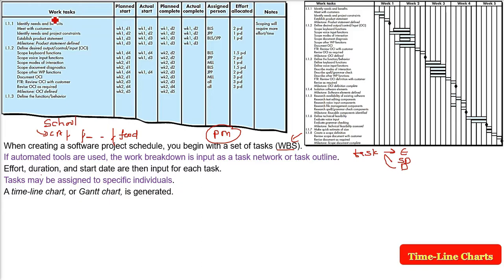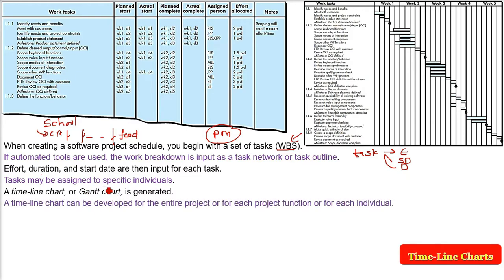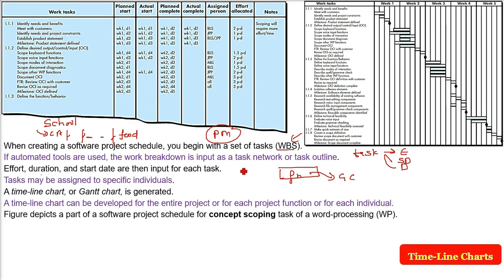When you know the start date and duration, you know the end date. A task will be assigned to certain individuals. The task names are in the first column of the Gantt chart. A work task on a time scale is the Gantt chart or timeline chart. A timeline chart or Gantt chart can be developed for the entire project, or for a significant individual function.